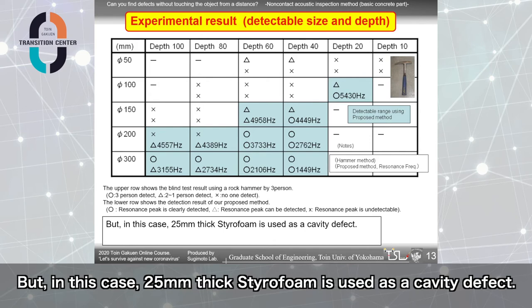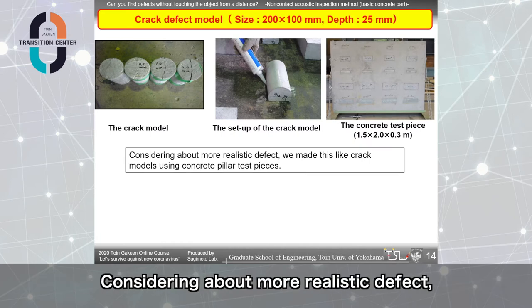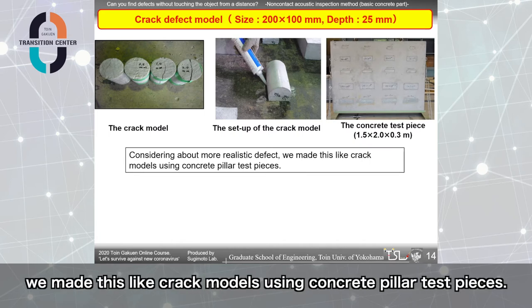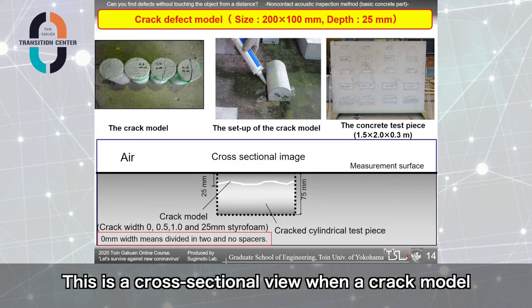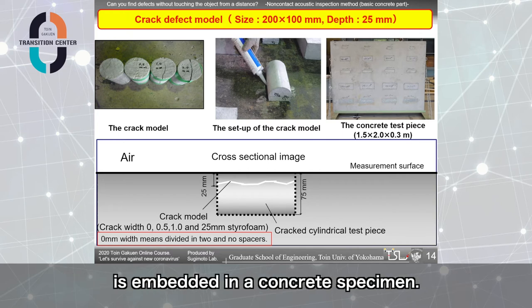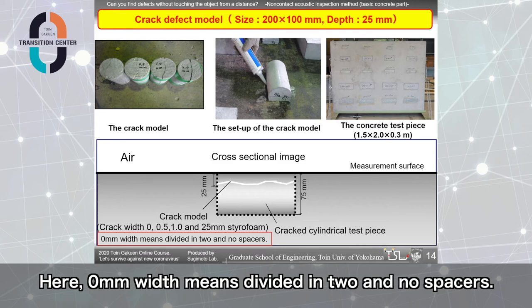But in this case, 25mm styrofoam is used as a cavity defect. Considering about more realistic defect, we made these light crack models using concrete pillar test pieces. This is a cross-sectional view when a crack model is embedded in a concrete specimen. Crack width 0, 0.5, 1.0, and 25mm styrofoam were prepared. Here, 0mm width means divided in two and no spacers.